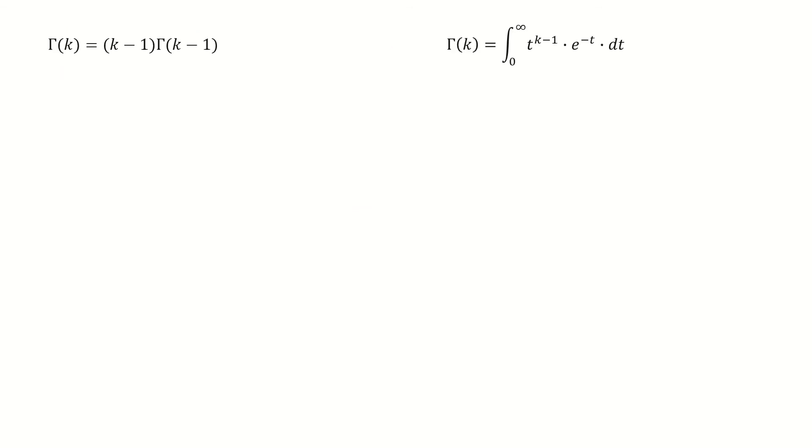I copy them here. First, we write this equation into this form by dividing gamma k minus 1 on both sides. If we plug in k equals 2, then we get gamma 2 over gamma 1 equals 1. If we plug in k equal to 3, then we get gamma 3 over gamma 2 equals 2. And keep going.